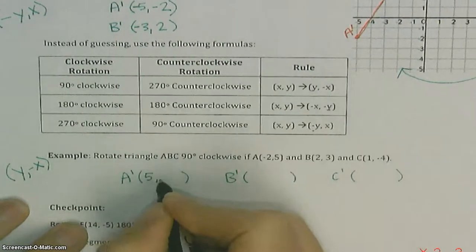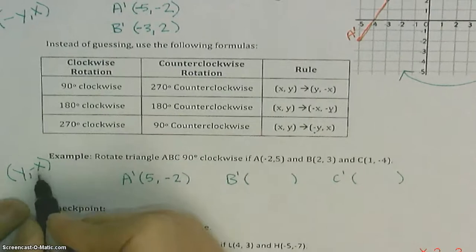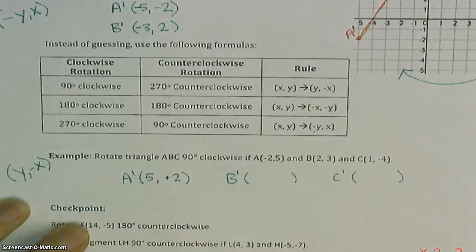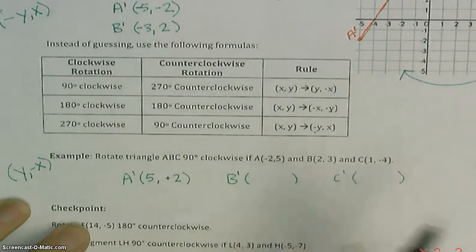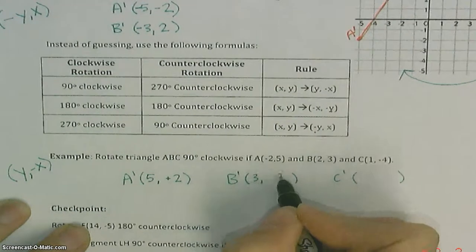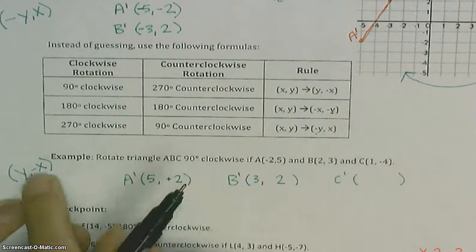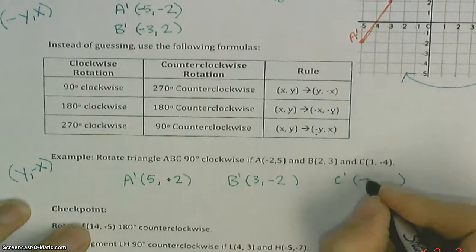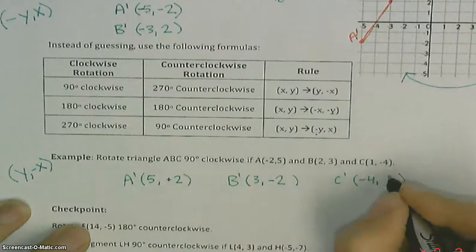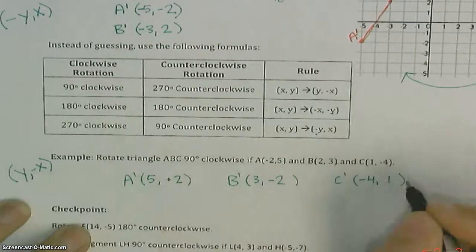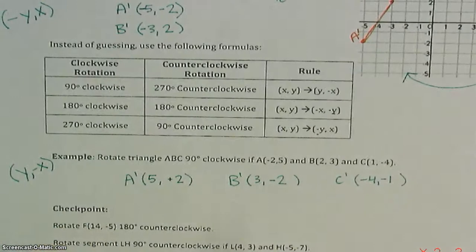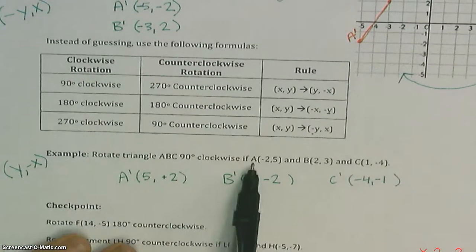For A: flip to (5, −2), change the sign of the back — pause. For each point, flip the coordinates and change the sign of the one in the back. That is where the new triangle goes when rotated 90 degrees clockwise.